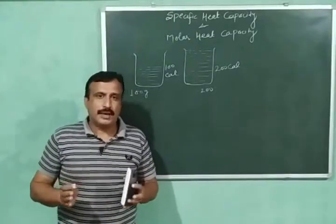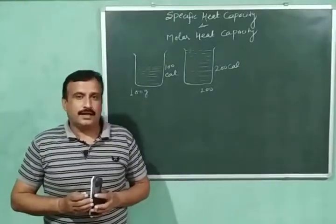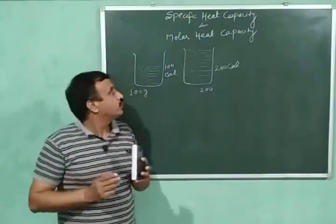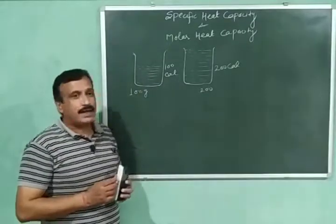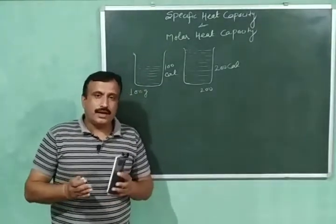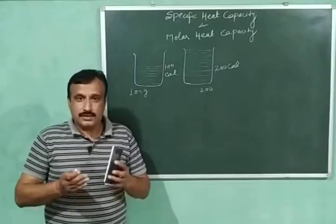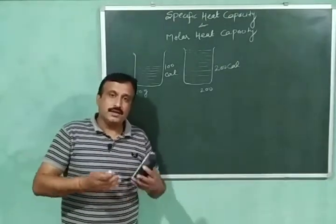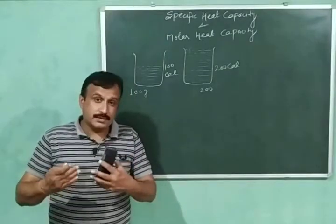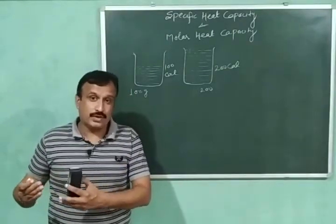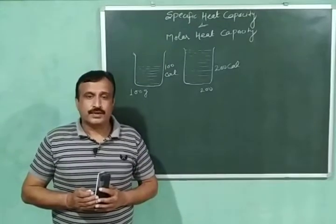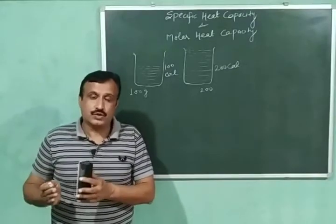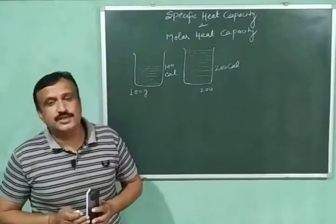Hello everyone, welcome back to DMG Chemistry classes. In today's video I am going to explain two very important terms: specific heat capacity and molar heat capacity. In my previous videos I discussed heat capacity, which is the amount of heat required to raise the temperature of the system through 1 degree Celsius, and we increase the temperature of the entire system. So heat capacity is an extensive property.